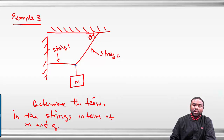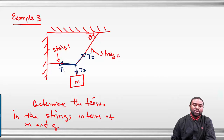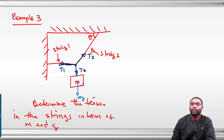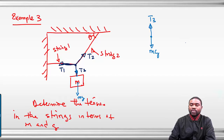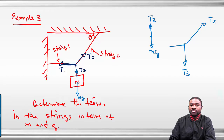Look up, everybody. Tension at a point always acts away from that point. So the tension here is acting away. The tension there is T2. The tension here is T1. And the tension here is T3. I would also want you to see that the tension at this point is acting away, so it's still T3. And the weight here is Mg.